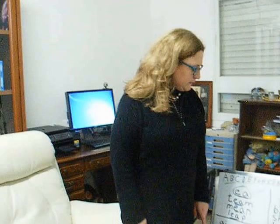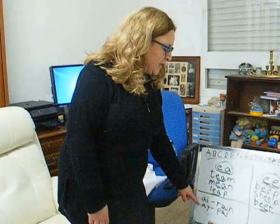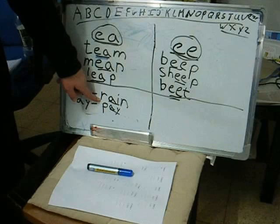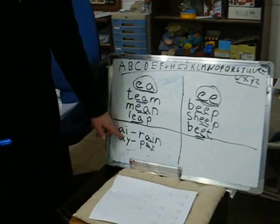Hi everybody. Today we're going to be doing some new vowel teams. You remember that yesterday we did the vowel teams A-I and A-Y. First I want somebody to read this word for me — it's a word from the A-I vowel team. Danny, you want to come up and read it? What does it say? Rain. Very good. And what's the vowel team in the word rain? A-I. And what sound does A-I make? A. Great.